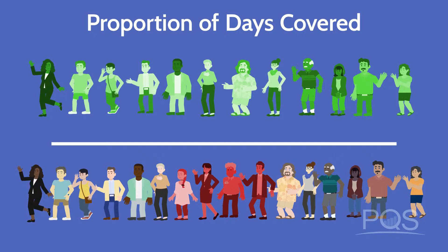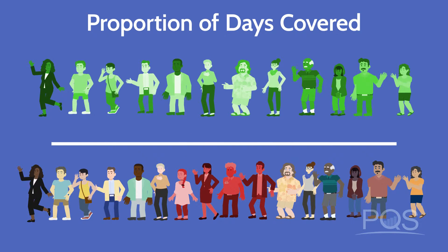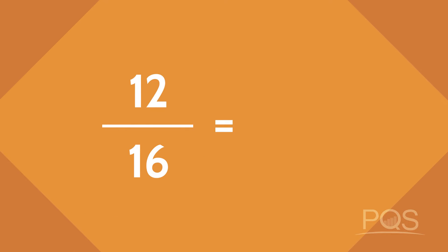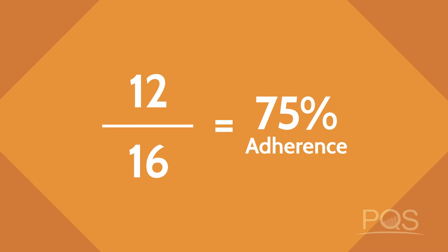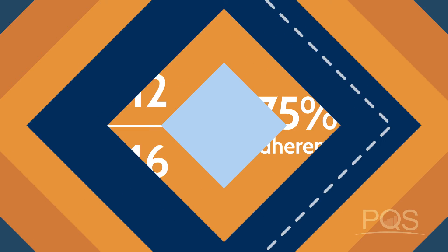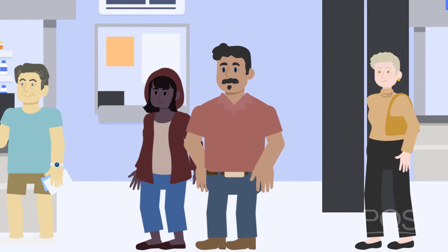In this sample, we find four patients that are non-adherent and twelve of them are adherent. Adherent patients divided by the total sample size equals a 75% population adherence score, which means we have work to do.